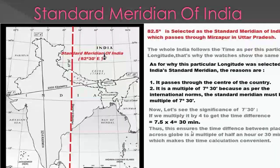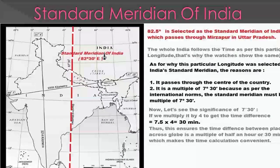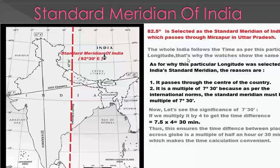82.5 degree east is selected as the standard meridian of India, which passes through Mirzapur in Uttar Pradesh. The whole of India follows the time as per this particular longitude — that is why all watches show the same time across the country.